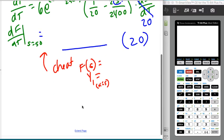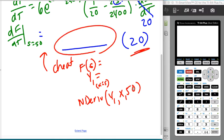The trick is, so you could then do nDerive of Y1 with respect to X at 50, but you would just have to remember to multiply it by the 20.